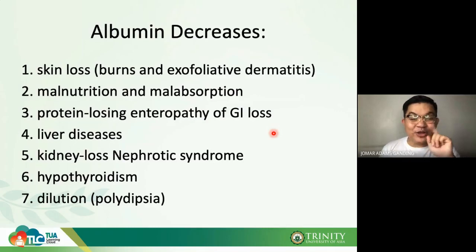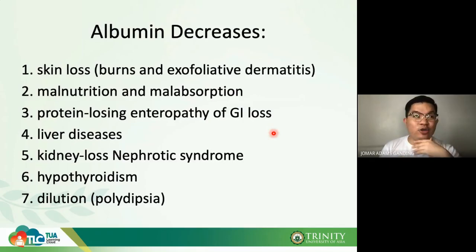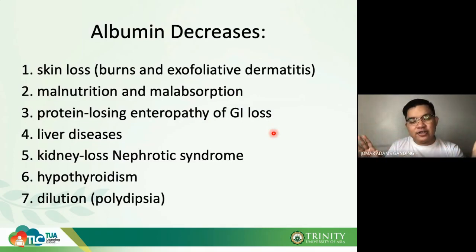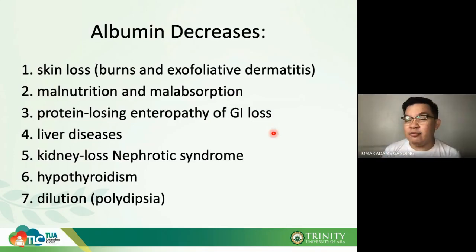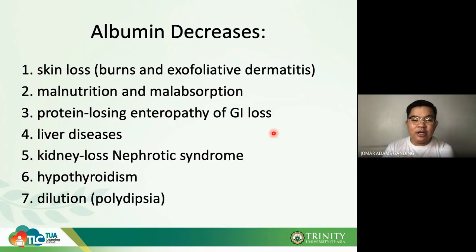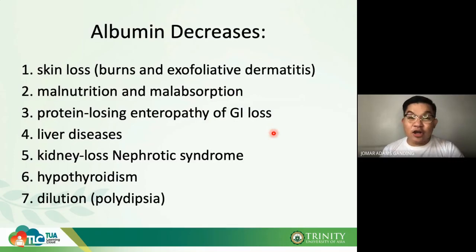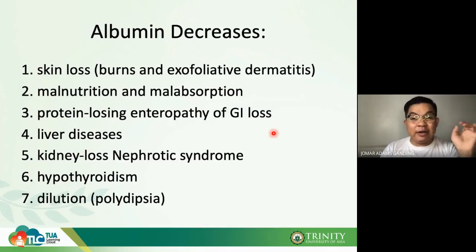Albumin is also decreased in kidney loss, as in nephrotic syndrome. The glomerulus is tightly fenestrated, but when those fenestrations loosen, proteins — especially albumin, which is relatively small — escape into the urine, causing proteinuria.